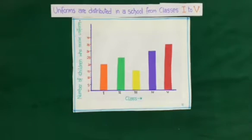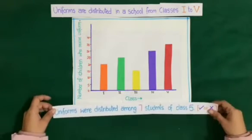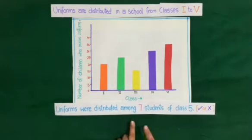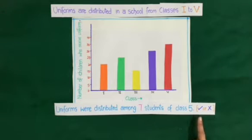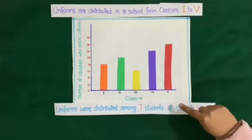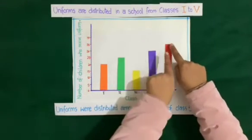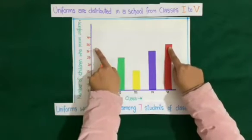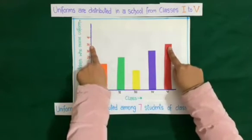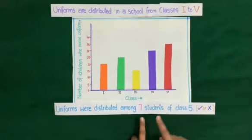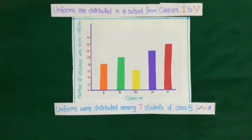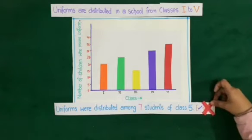Next question: uniforms were distributed among 7 students of class 5. We will see whether this statement is correct or wrong. Looking at the rectangular bar of class 5, the number of students who received uniforms is 35. The question states 7 students, so this statement is wrong — we will put a cross against this statement.